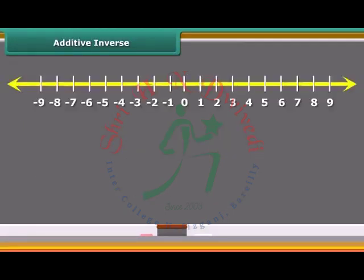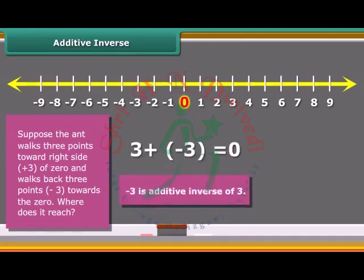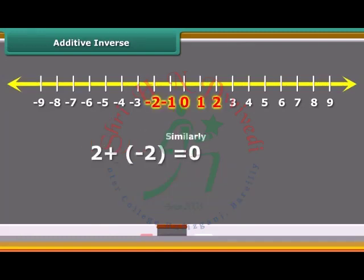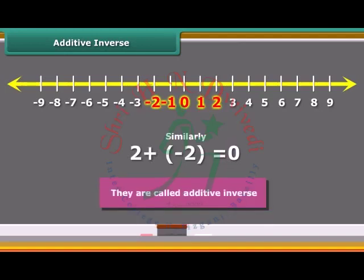Now we will learn additive inverse. Suppose the ant walks three points from 0 to the right side and walks back three points. Where does it reach ultimately? You can see that it will reach to 0. We add 2 and minus 2, we obtain the sum as 0. Numbers such as 3 and minus 3, 2 and minus 2, when added to each other, give the sum 0. They are called additive inverse.